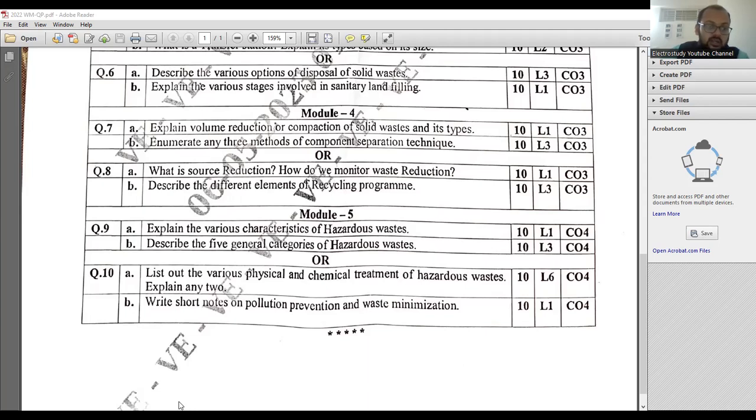These are the different options. We already discussed the various options like uncontrolled dumping, sanitary landfilling, composting, incineration, gasification and pyrolysis. You can explain in brief. It carries the weightage of 2 marks into 5 points, total 10 marks.